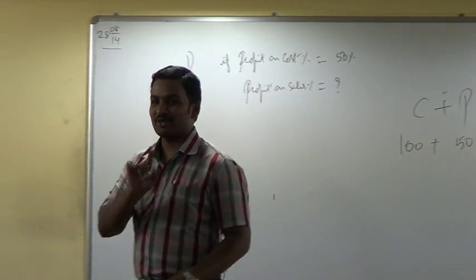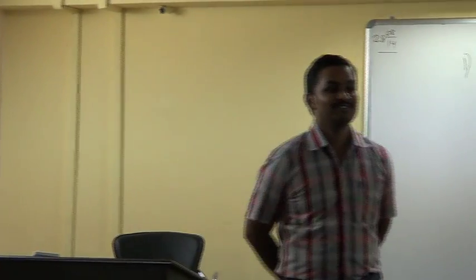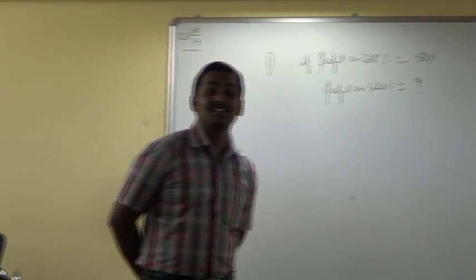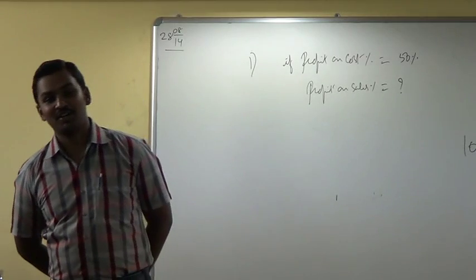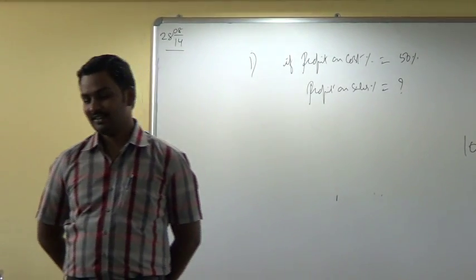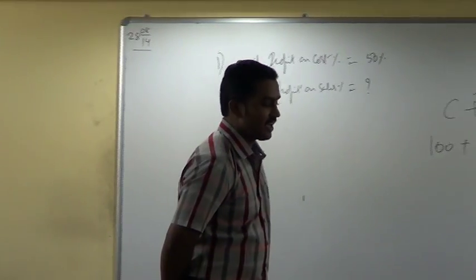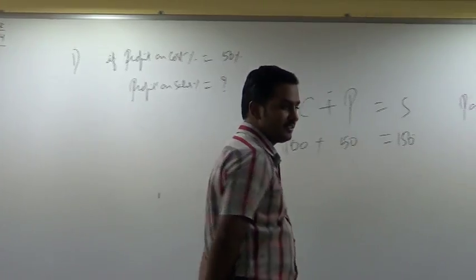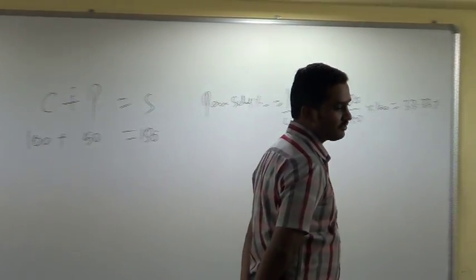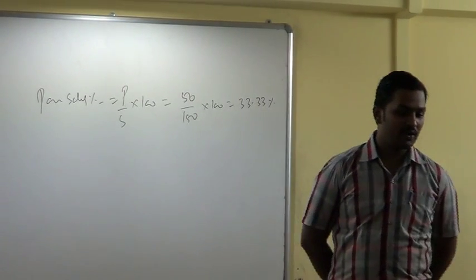Now frame the question and solve it on your own. The question should be: if profit is 33.33% on sales, calculate profit on cost percentage. Can you do it?